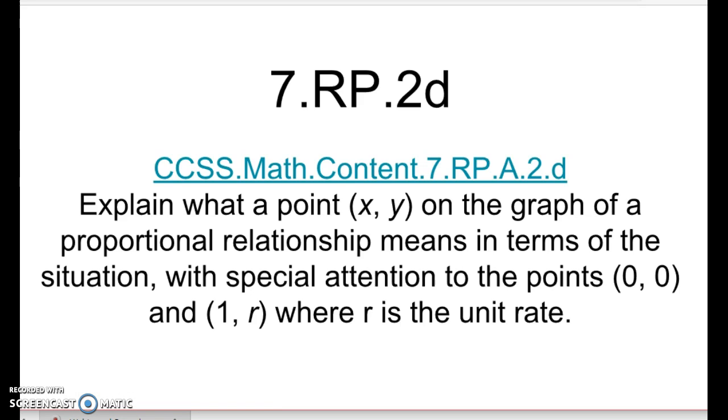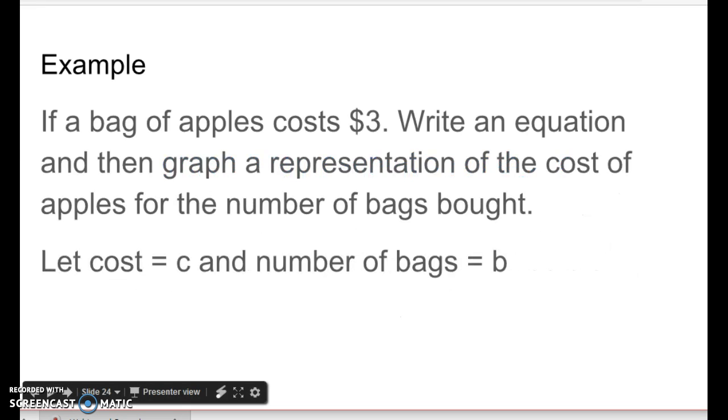Explain what a point x, y on the graph of a proportional relationship means in terms of the situation with special attention to the points 0, 0 and 1r, where r is the unit rate. It sounds complicated, but it's not. We have to pay attention to words. So let's take a look at an example.